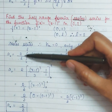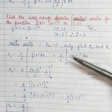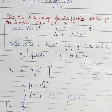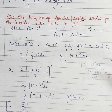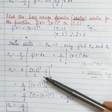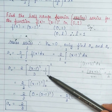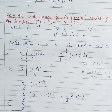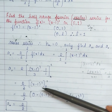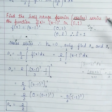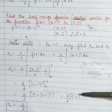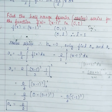A0 = 2/L · integral from 0 to L of f(x) dx = 2/1 · integral from 0 to 1 of (x-1)² dx. You can substitute u = x-1 or use the formula directly: integral of (ax+b)^n dx. So (x-1)³/3, and the differentiation of x is 1. Substituting the limits: upper limit gives (1-1)³ = 0, lower limit gives (-1)³ = -1. Upper minus lower: these two minuses together give A0 = 2/3.